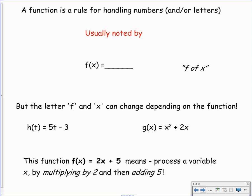In the bottom there, I've got an example of a function, which is f of x equals 2x plus 5. And all this means is we're processing some variable x by multiplying by 2, and then by adding 5. So 2x means multiply by 2, and then plus 5, obviously we're adding 5 onto that. And that's performing a function or an operation on some number or variable for x.